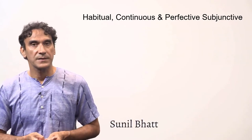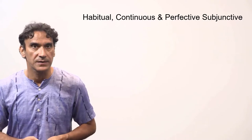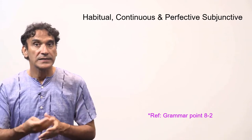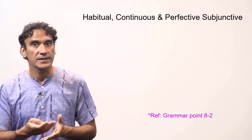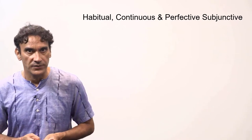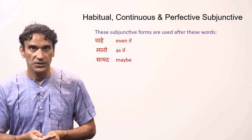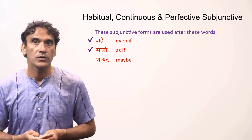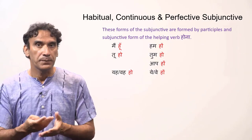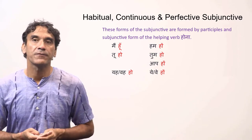Our next grammar point is different types of subjunctive: the habitual subjunctive, the continuous subjunctive, and the perfective subjunctive. In grammar point 8.2 we learned the simple subjunctive — the subjunctive expresses a wish, a desire, or a request. The subjunctive also has habitual, continuous, and perfective forms, which are usually used after these phrases: 'chahe' (even if), 'mano' (as if), and 'shayad' (maybe). These forms are made with the participle and the subjunctive form of the helping verb 'hona'.